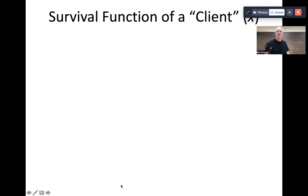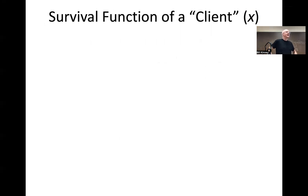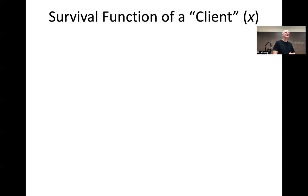On to something new: the survival function of a client. What's a client? Think business. If you're in the business world, your customer is your client. Rarely do people do business with newborn babies — at least not directly. Usually, insurance companies are doing business with people that are at least 20 years old. That's what the X in parentheses is supposed to represent: an X-year-old. If X is 20, it's a 20-year-old. Somewhat standard notation and terminology here.